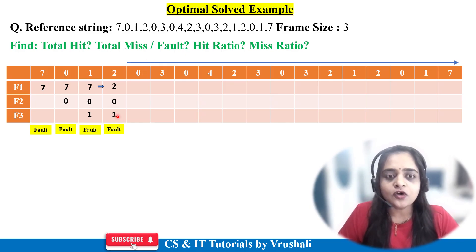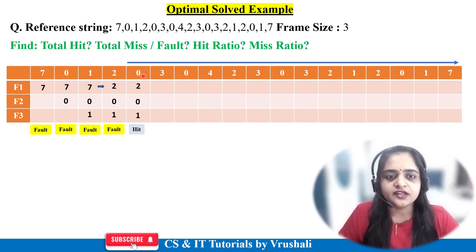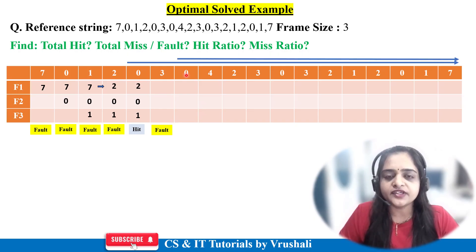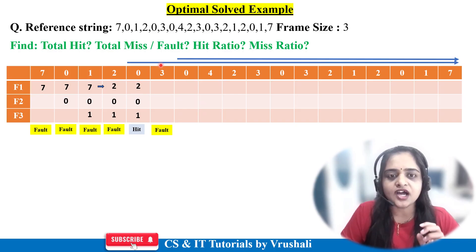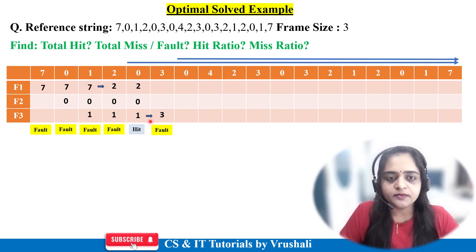Next is page 0 — page 0 is already present in main memory, so this is a page hit. Write down the data as it is: 2, 0, 1. Next is page 3 — not present in main memory, so page fault. Check the future reference page from this position: frames hold 2, 0, 1. After page 3, looking ahead, 0 is there, 2 is there, but 1 is present last. So you replace page 1 with page 3 and keep remaining data as it is.